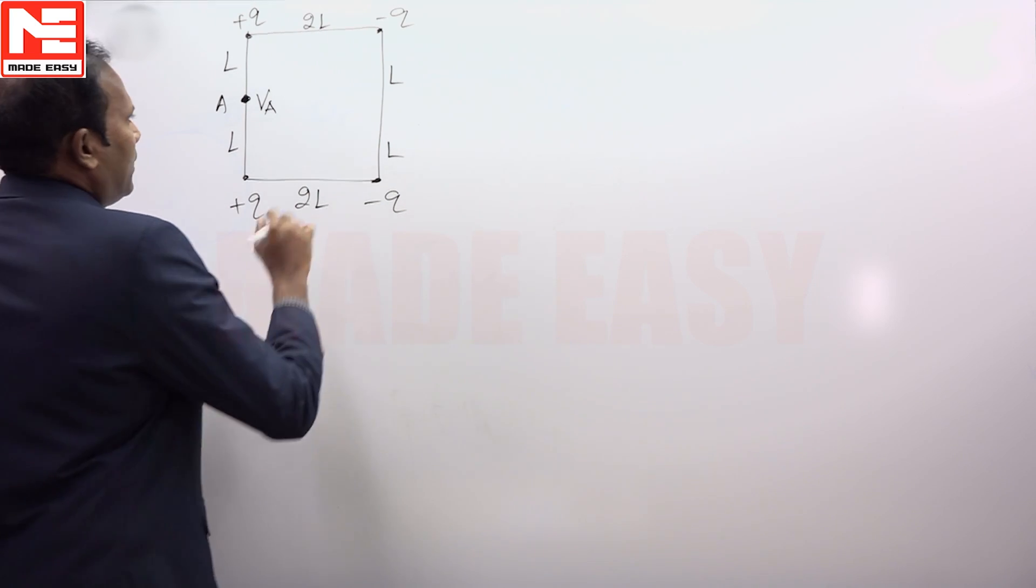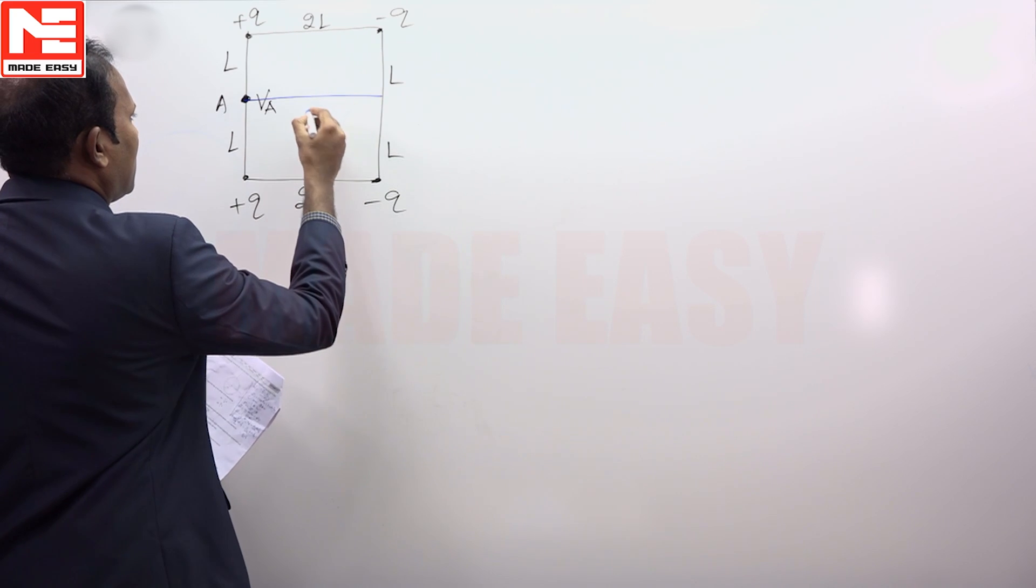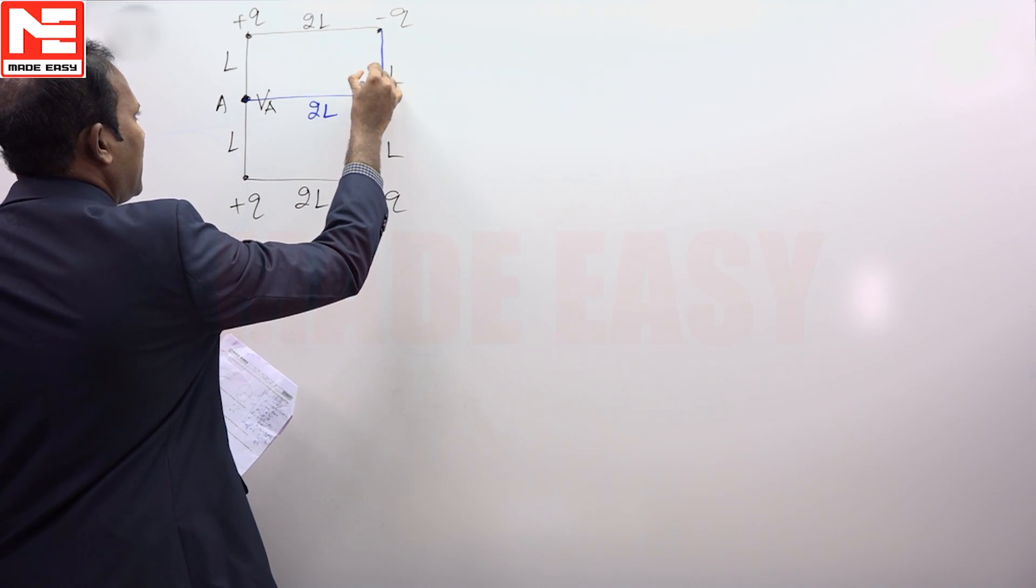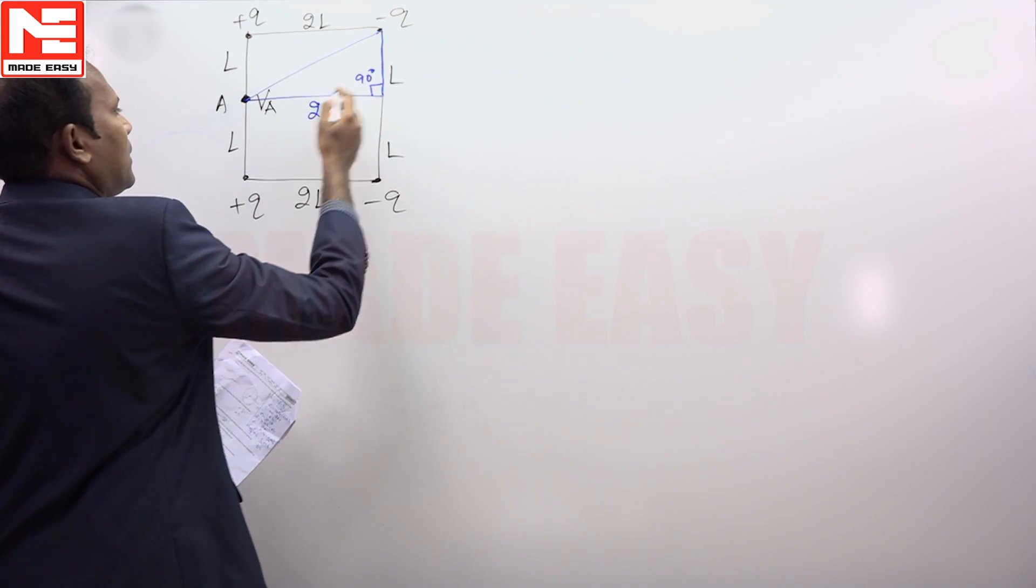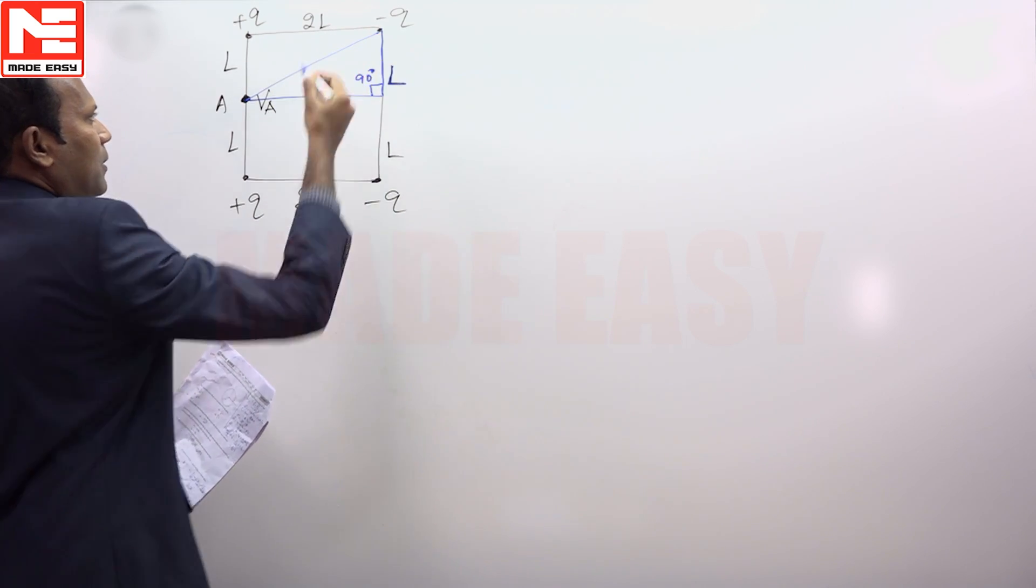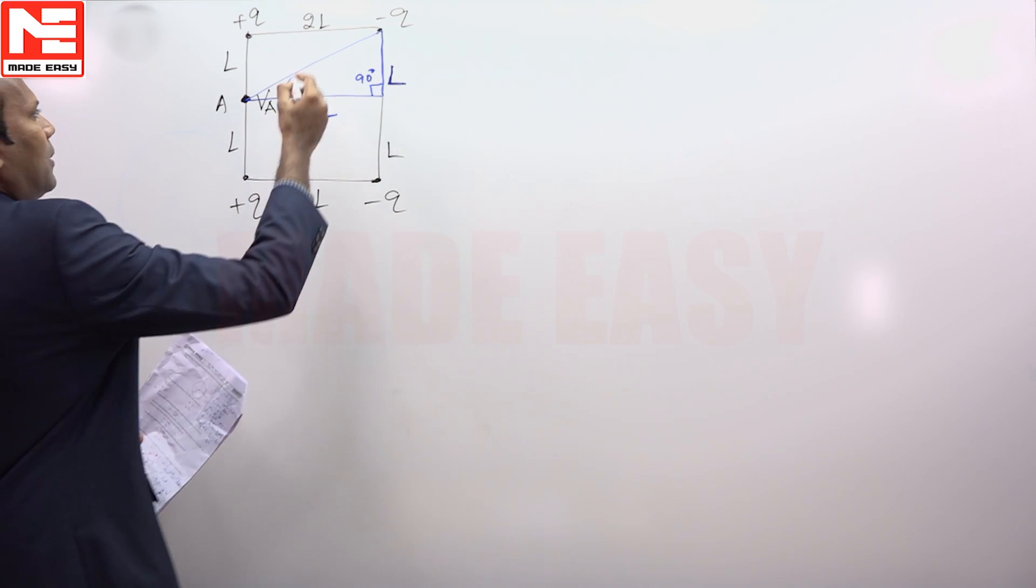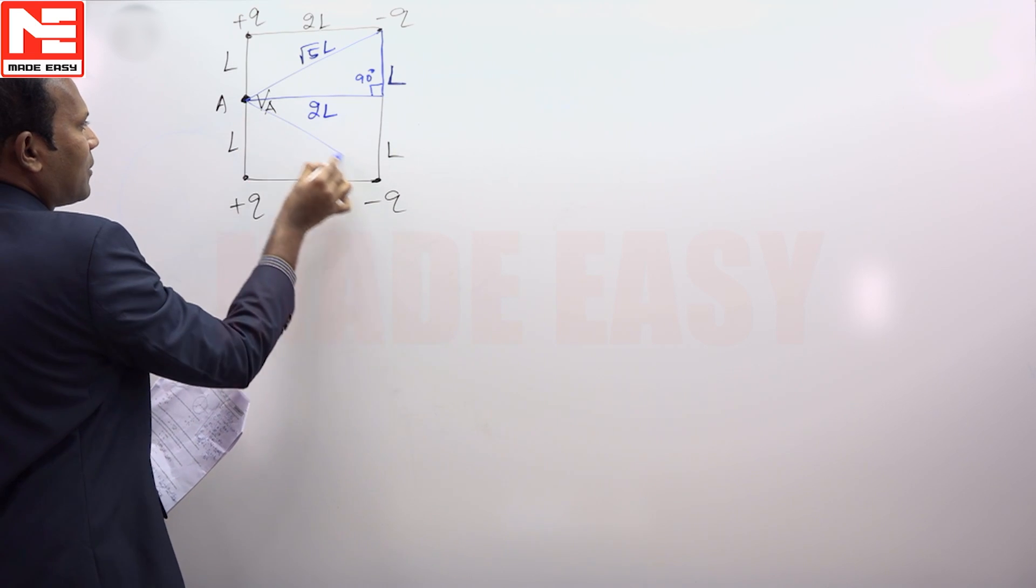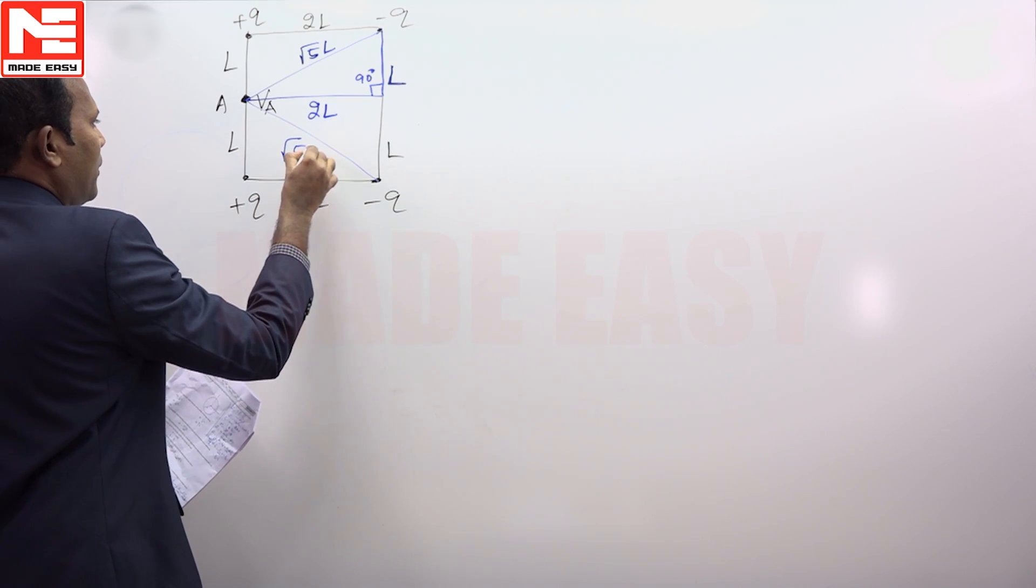You must understand this is 2L and this is L, 90 degrees. So this distance according to Pythagoras principle, you get root 5L, and of course this is also root 5L.